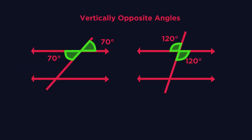And so the final thing we need to know are vertically opposite angles. What do you notice? Opposite angles on a point are always equal.